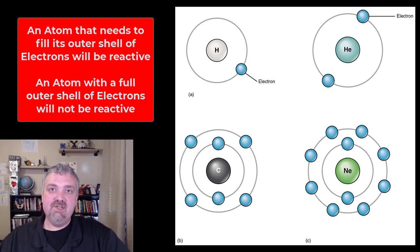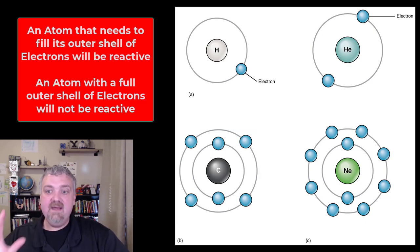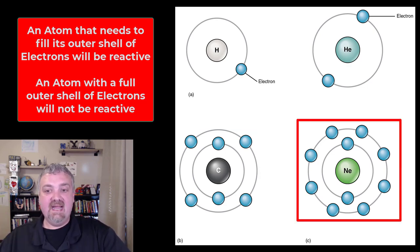After that first electron shell that only holds two, the second shell and all the shells we care about after that are going to hold eight electrons. Here we see carbon, its first electron shell is full with the two electrons. Its second shell is only half full, so it has four electrons in its outer shell and it wants eight. So it wants to be like neon sitting next to it. Neon, its first shell is full and its second shell has all eight electrons full.